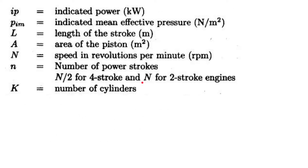The fuel-air ratio is very sensitive to the units you are using. Whatever power is specified, use kilowatts; for pressure, use N/m², bar, or atm — but be consistent with units. Use length and area in meters and m², speed in RPM or radians per second as needed. N is the number of power strokes: for a four-stroke engine, small n = capital N / 2; for a two-stroke engine, small n = capital N. k is the number of cylinders.